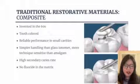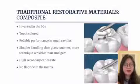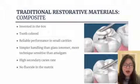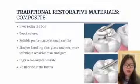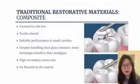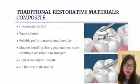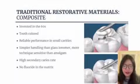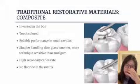To combat the allergy and color issue, people invented composite in the 60s. It's a tooth-colored material that fits a shade match with the teeth pretty well, and it has pretty reliable performance in small cavities. It has simpler handling than glass ionomer. However, it's a little bit more technique-sensitive than amalgam, and it has a pretty high secondary caries rate — there's a pretty high risk that the filling will fall out. This material simply has no fluoride or calcium incorporated in its matrix.